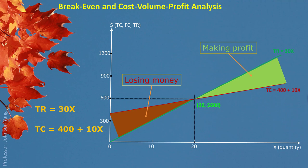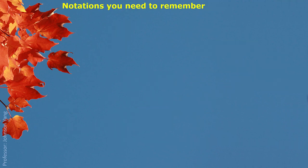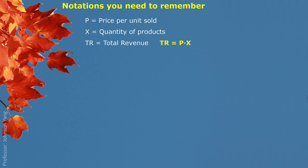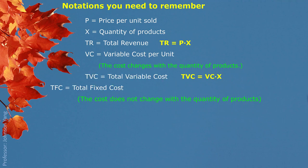We can see the break even point from the chart directly. We can also use the basic concept to solve the break even point with mathematical expressions. We give some explanations of the typical notations we use. P represents price per unit, X represents the quantity of products, and TR is total revenue, so TR = P × X. VC is the variable cost per unit, and TVC is the total variable cost, so TVC = VC × X.